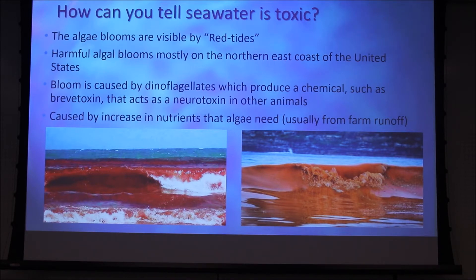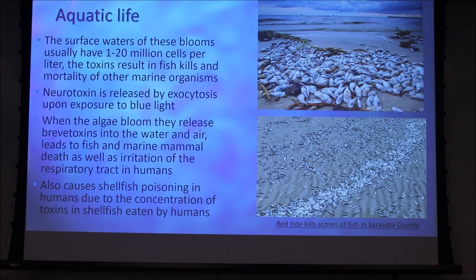Harmful algae blooms occur mostly in the north. However, these dinoflagellates reproduce chemicals such as brevetoxin and act as a neurotoxin in other animals. It's caused by an increase in nutrients that algae need from farm runoff. The surface waters of these blooms usually have about 1 to 20 million cells per liter. The toxins result in fish kills and mortality of other marine organisms.